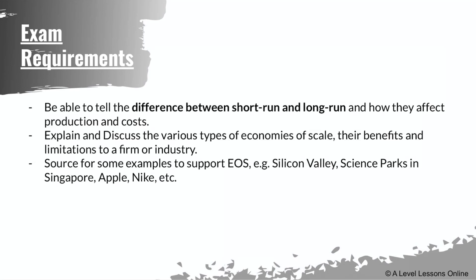That covers everything on cost and revenue. Based on your syllabus, you need to understand the differences between short run and long run, what they affect in terms of production and cost, and the various types of economies of scale and diseconomies of scale — both their benefits and limitations to a firm or industry. Learn your internal and external EoS in detail, and look for examples such as Silicon Valley for external EoS, and companies like Apple and Nike for internal EoS.